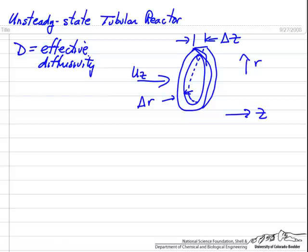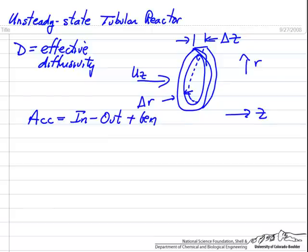We're going to do the same kind of material balance, but now, unlike the simple plug flow reactor, we're allowing for things to change with time. We're going to look at accumulation, material flowing in and out, and then generation due to reaction. We're doing the balance on one component.